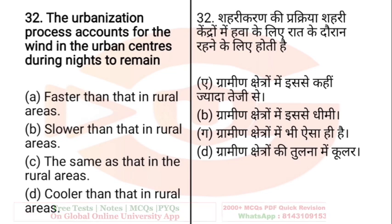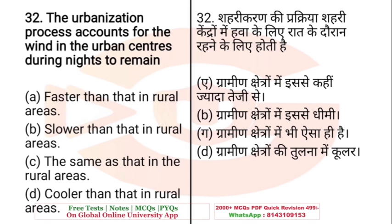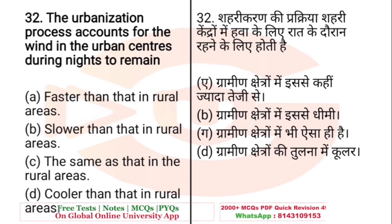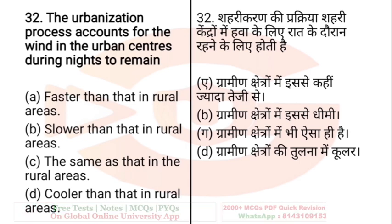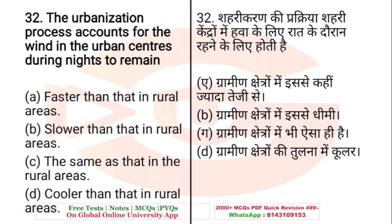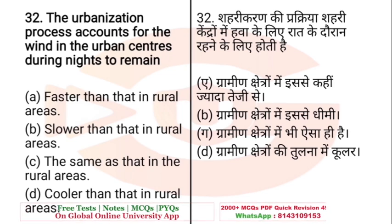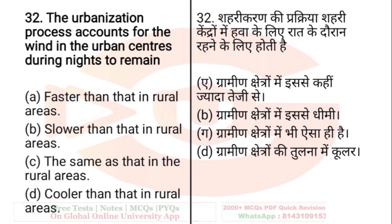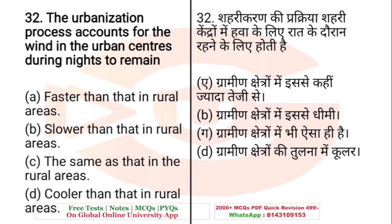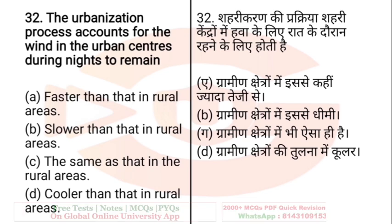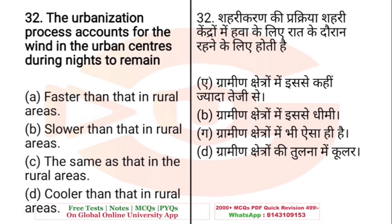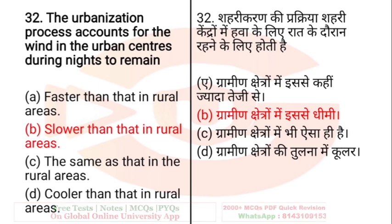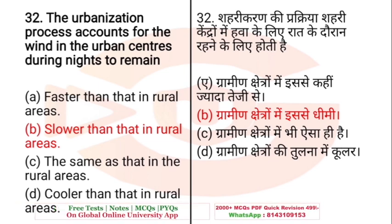Question: The urbanization process accounts for the wind in urban centers during nights to remain — A. Faster than in rural areas, B. Slower than in rural areas, C. The same as in rural areas, D. Cooler than in rural areas. The right answer is B — slower than in rural areas.